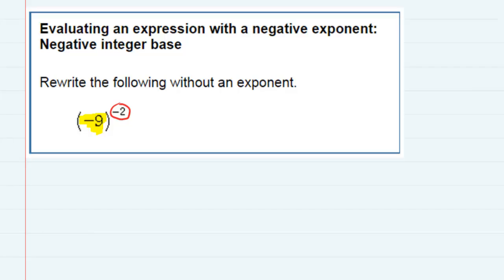In an earlier video we said that you could get rid of the negative exponent by flipping what is inside, and although our inside is not a fraction, we could still write it as a fraction by just making it negative 9 over 1.